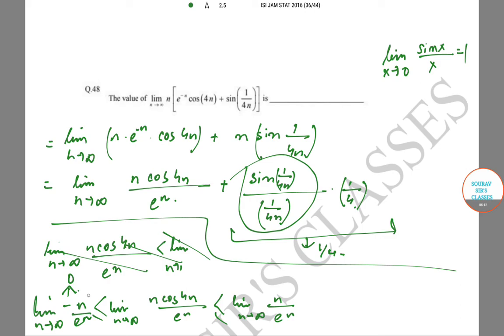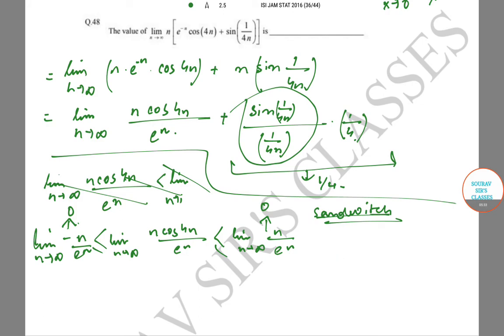Limit of n·cos(4n) as n goes to infinity is bounded, and this limit of n/eⁿ also goes to 0 as eⁿ/n goes to infinity when n goes to infinity.